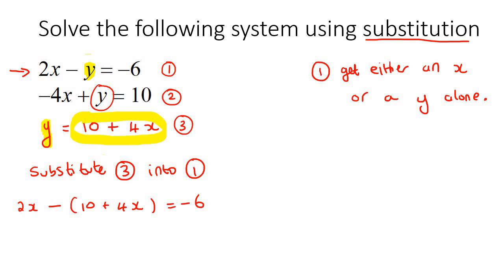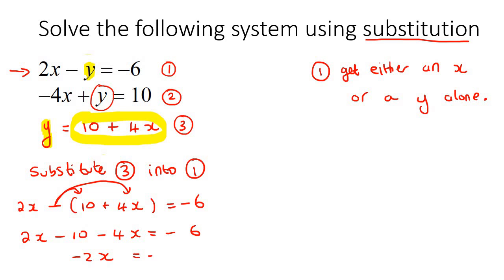Now we multiply that negative into the brackets, giving us 2X take away 10 take away 4X equals negative 6. That simplifies to negative 2X, then taking the 10 over to the other side gives negative 2X equals 4. Therefore X is negative 2.